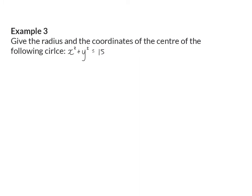We can also give you an equation and ask questions about it. In Example 3, we are asked to give the radius and the coordinates of the center of a given circle equation. From the standard form, we can see this is a circle with center at the origin, so the center's coordinates are (0, 0). The number 15 in the equation represents r squared, so the radius of the circle is the square root of 15.